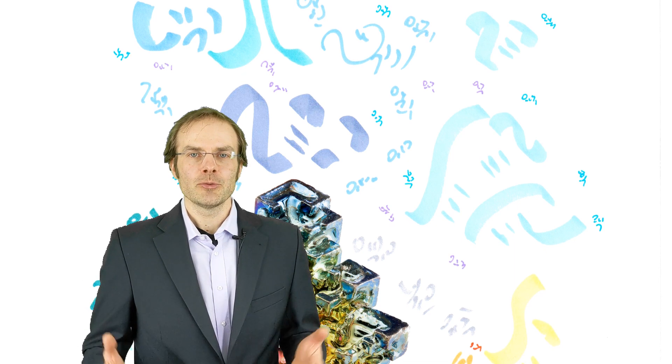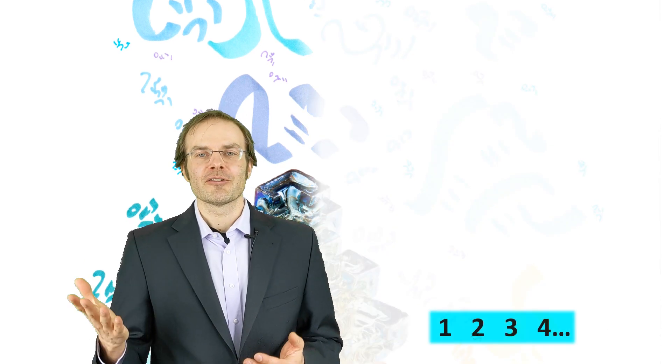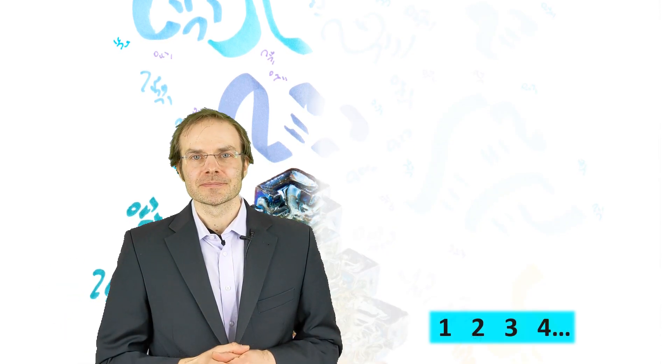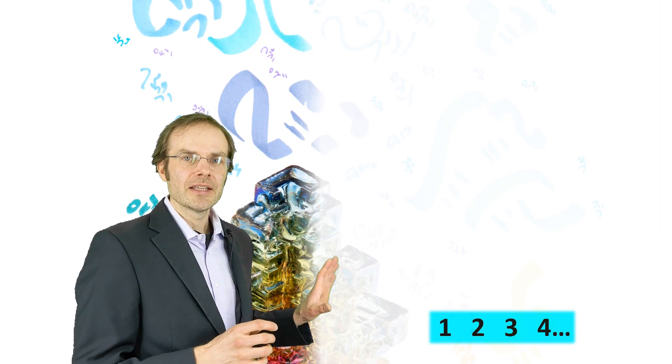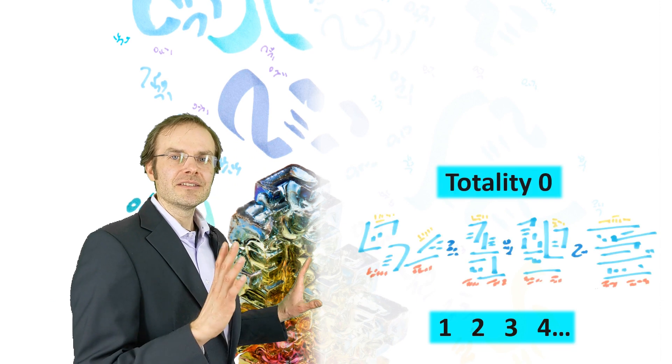So Burkhard Heim's intent was to describe the world in its entirety, and to have a starting point, he did what every physicist would do: he started with mathematics. So what is the very basic of mathematics? It's one, two, three, four—the set of natural numbers. That's the starting point to describe the world, and I'm putting this here and call it totality zero.